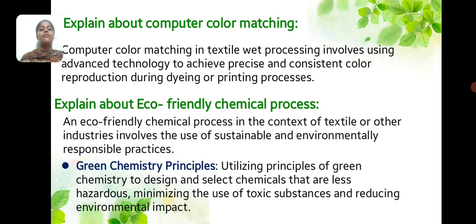Explain about an eco-friendly chemical process. An eco-friendly chemical process in the context of textiles or other industries involves the use of sustainable, environmentally responsible practices based on green chemistry principles — utilizing those principles to design and select chemicals that are less hazardous, minimizing the use of toxic substances, and reducing environmental impact.